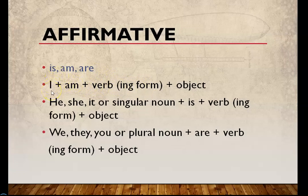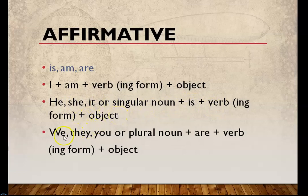The formula is: Subject I + am + ing form of the verb + object. For he, she, it, or a singular noun: is + ing form of the verb + object. For we, they, you, or a plural noun: are + ing form of the verb + object.